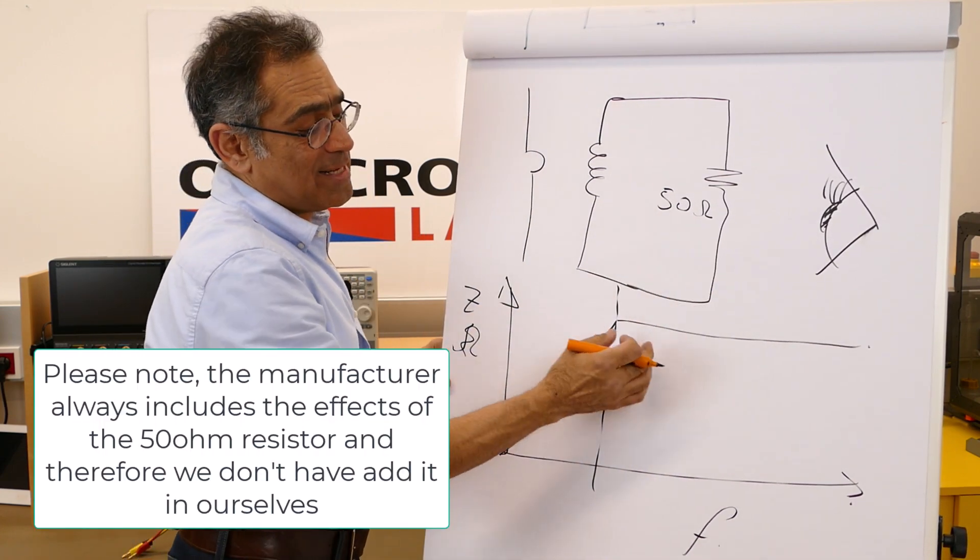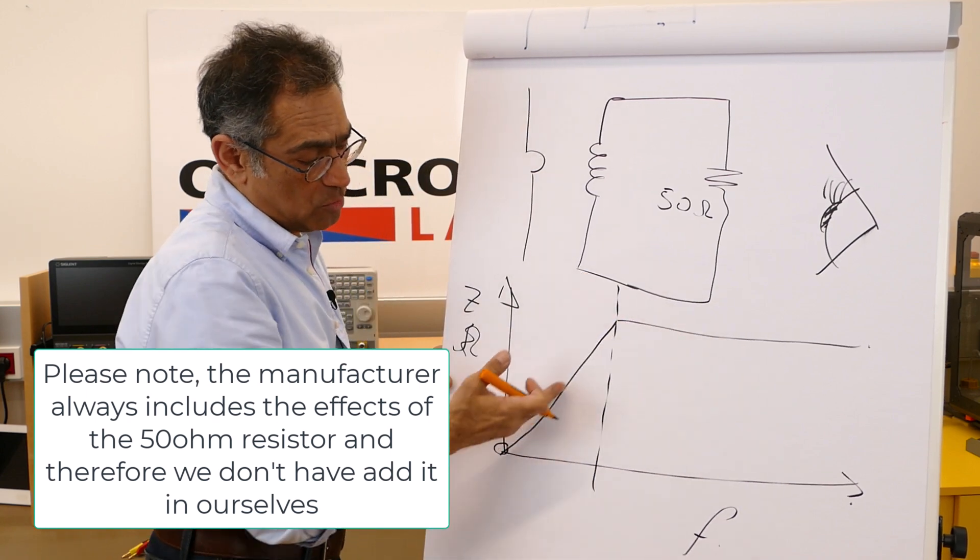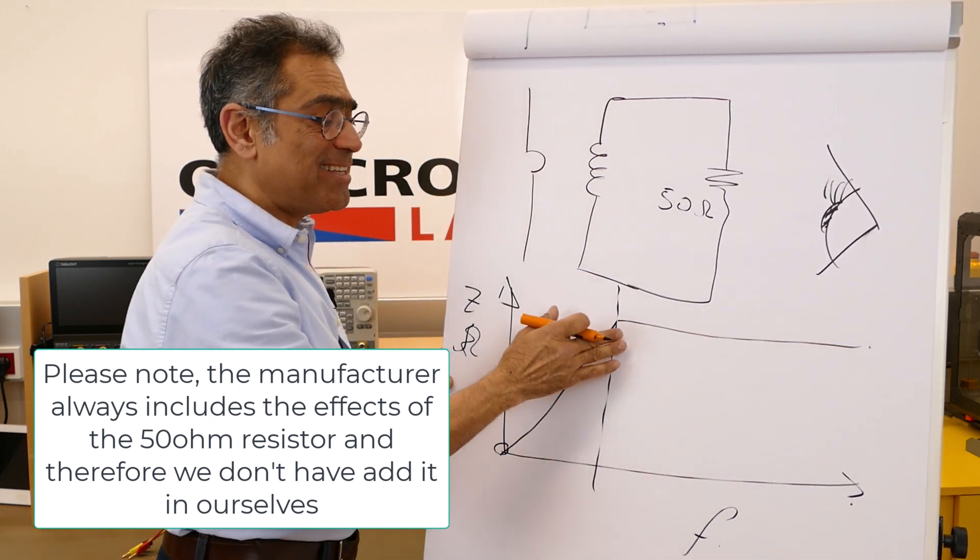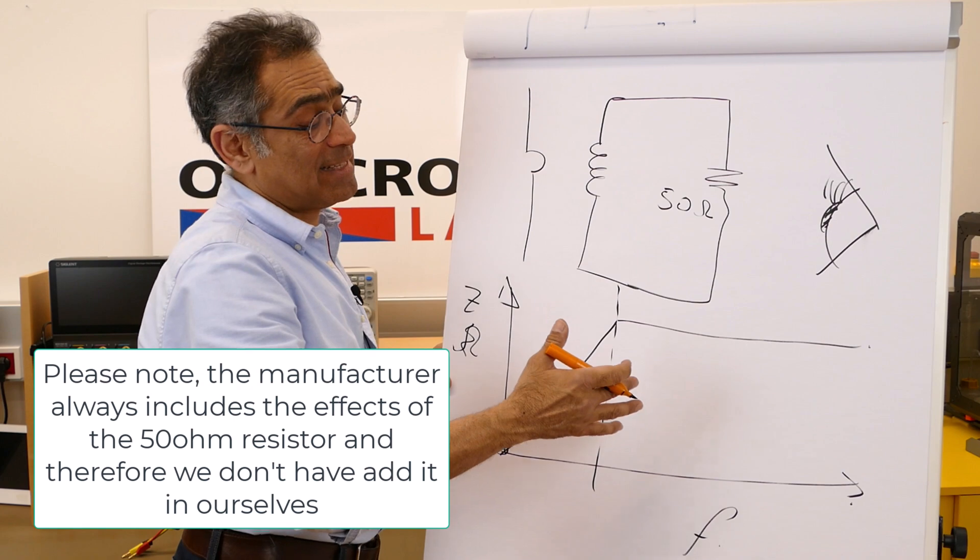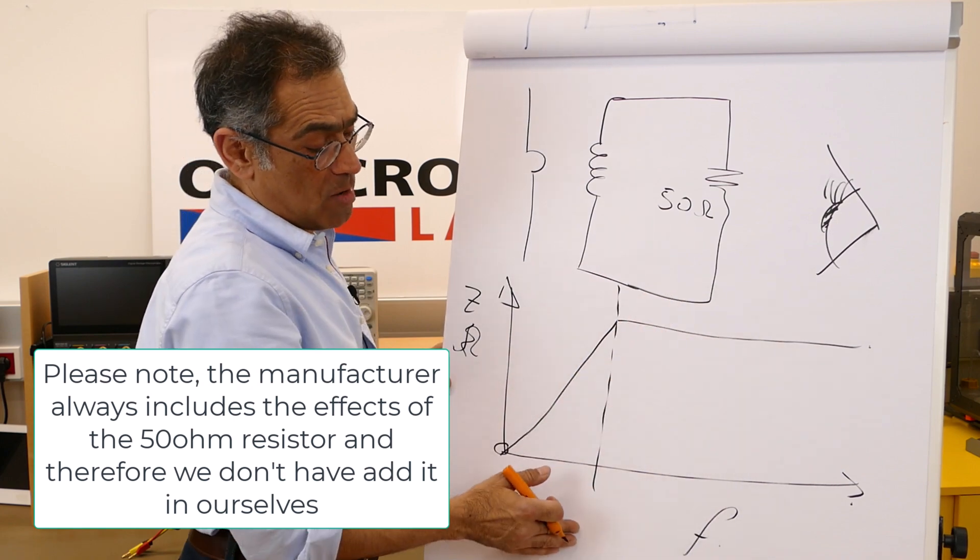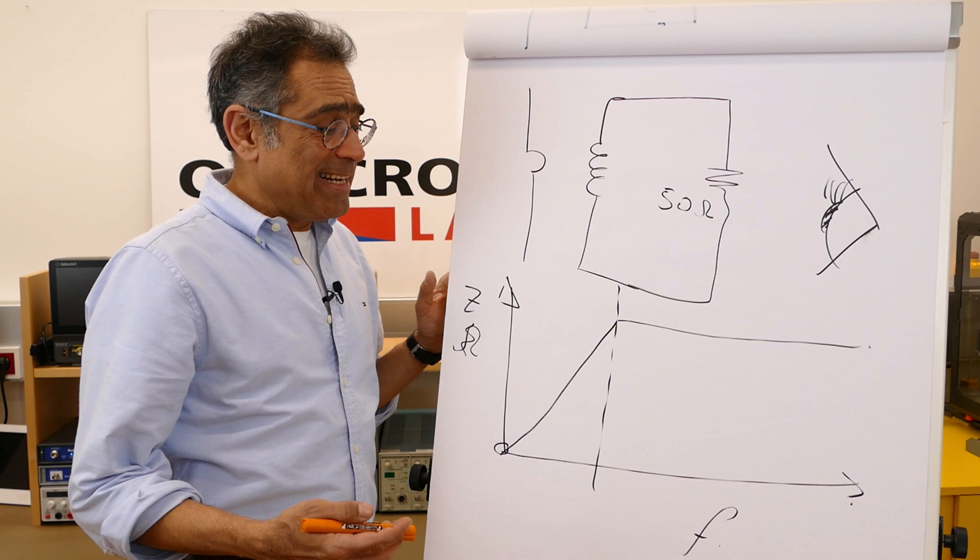We usually operate it in this current region. This is called the voltage region, that's called the current region, and this region is typically flat and it makes it easier for us to make our measurements.